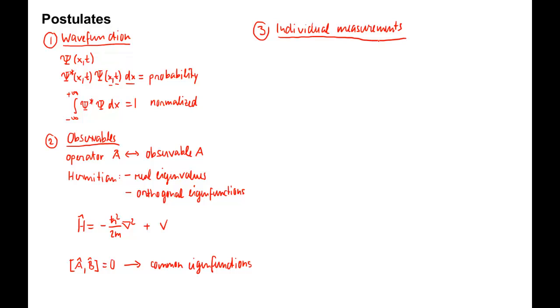The outcome of a single measurement on a system of the observable A can only give one of the eigenvalues of A, also known as lowercase ak. So if you measure a, we can only get an eigenvalue of A hat, for example, ak.